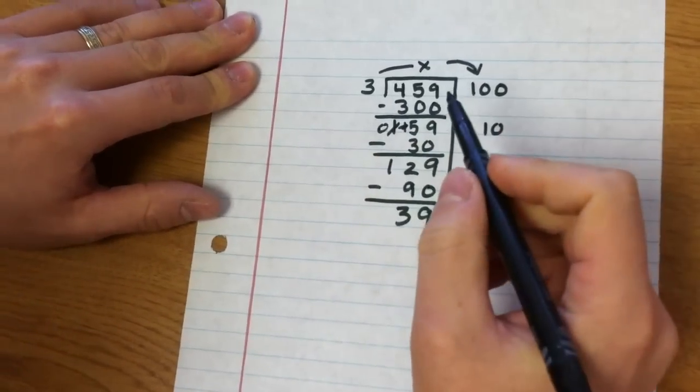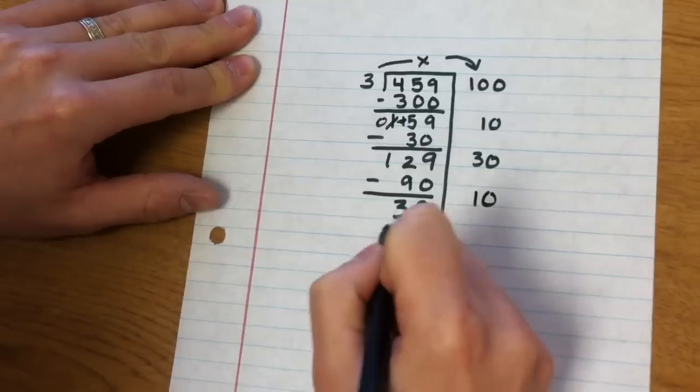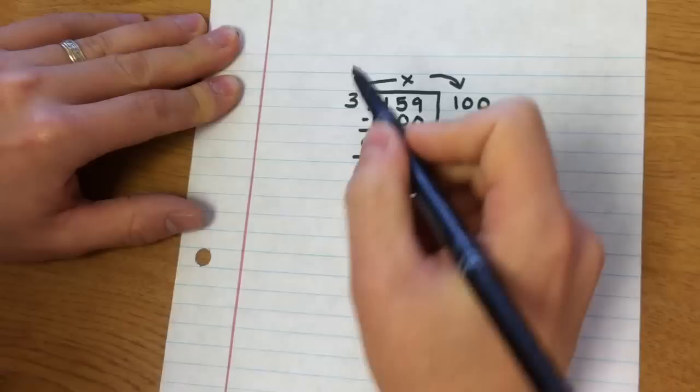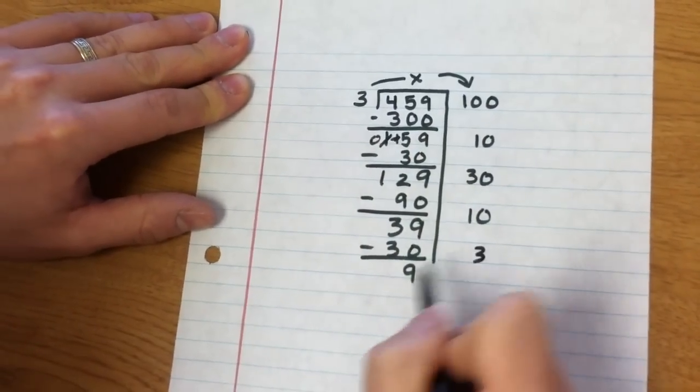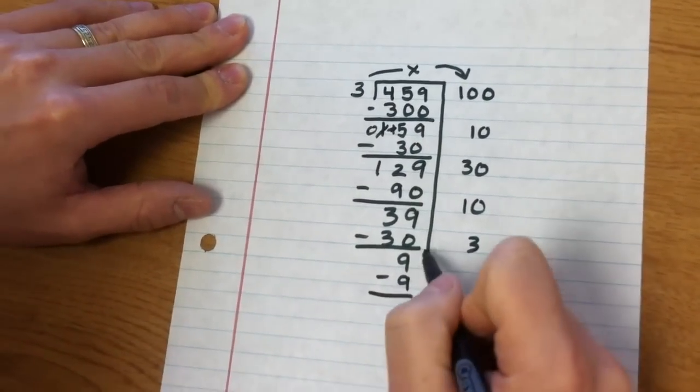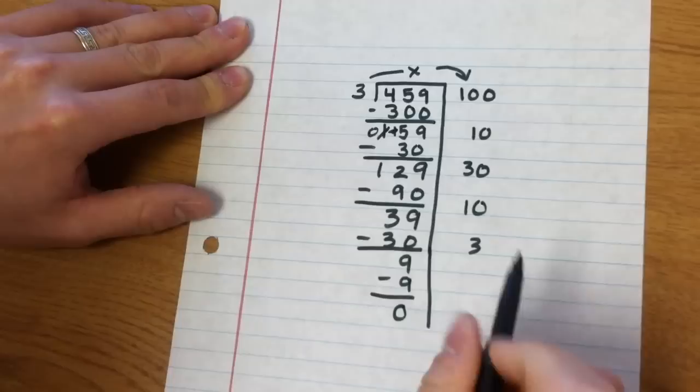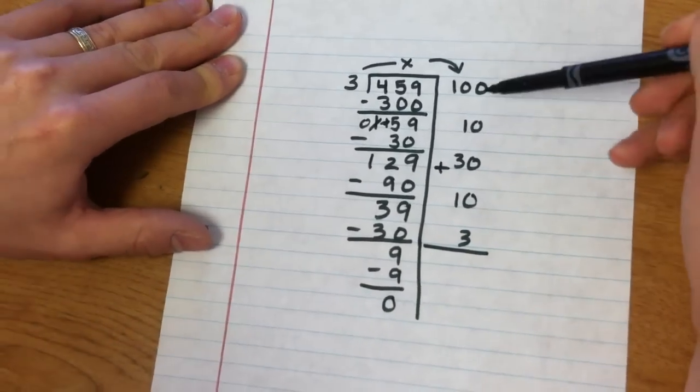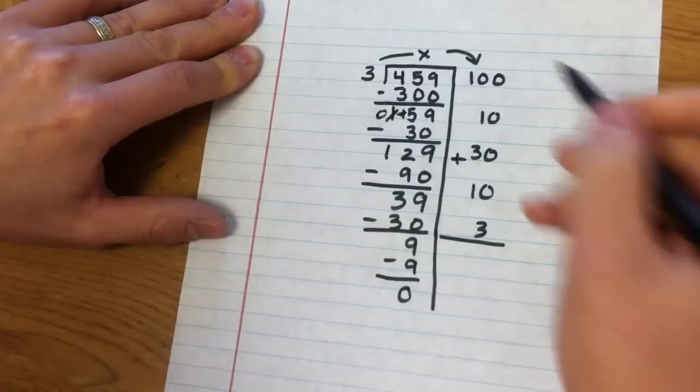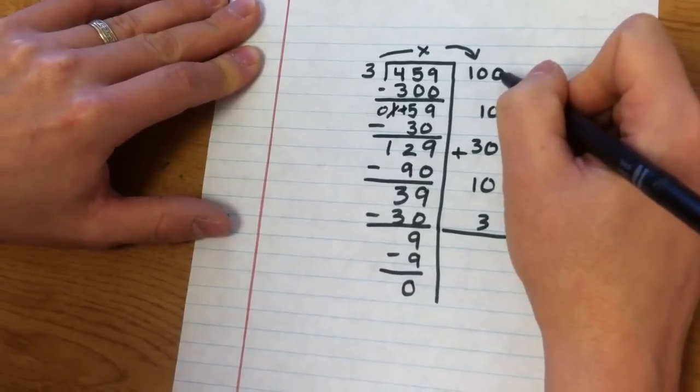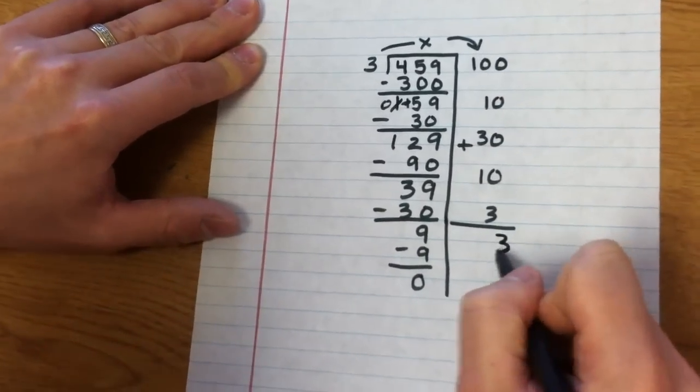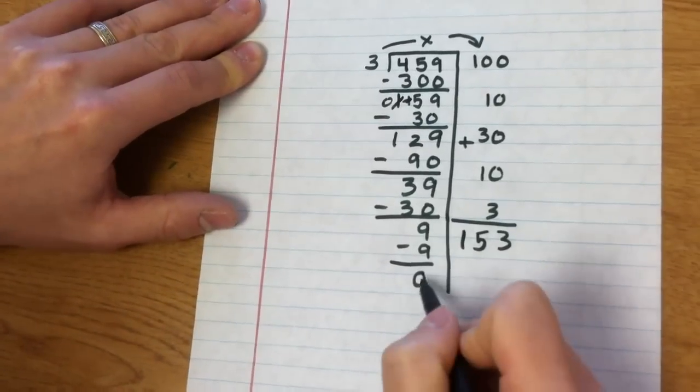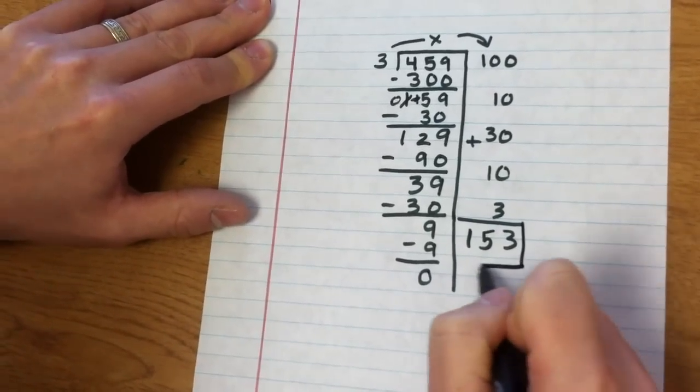And then I could say, I know 3 times 10 again is 30. That gives me 9. And then I could say, I know 3 times 3 is 9. So I'll subtract, extend this down. That would be 0. And then I'm just going to add up all of my factors over here. And it's kind of nice, too, if we line them up, it makes it a little bit easier, which I'll show you something I'm going to talk about in class here on our next problem. So we've got 3, that's 4, that's 5, 153. There is no remainder. So we'll just box that up. There's our quotient.